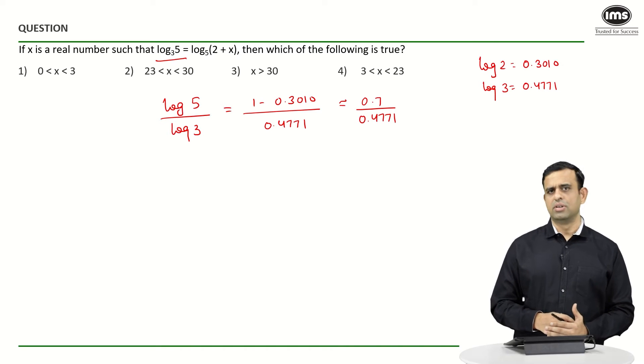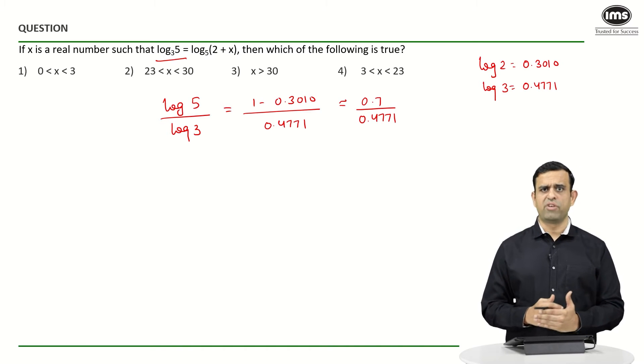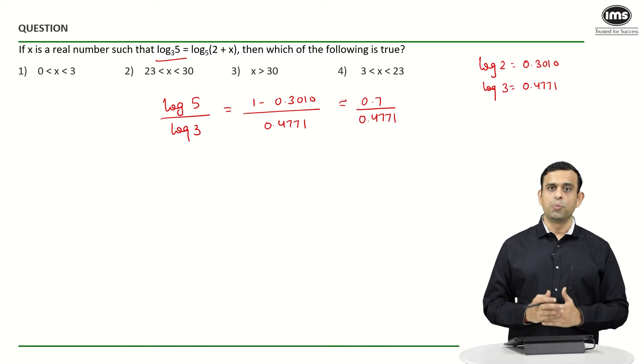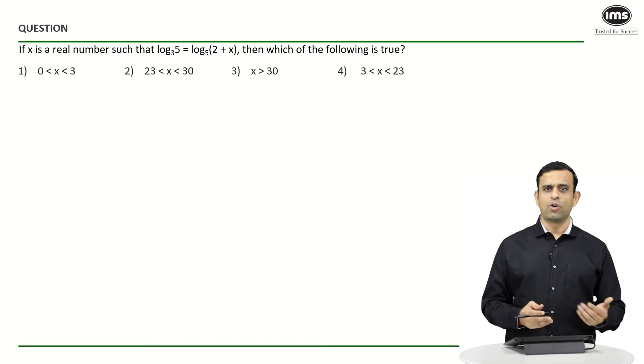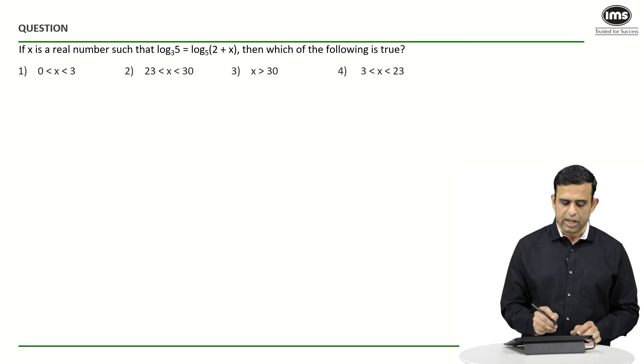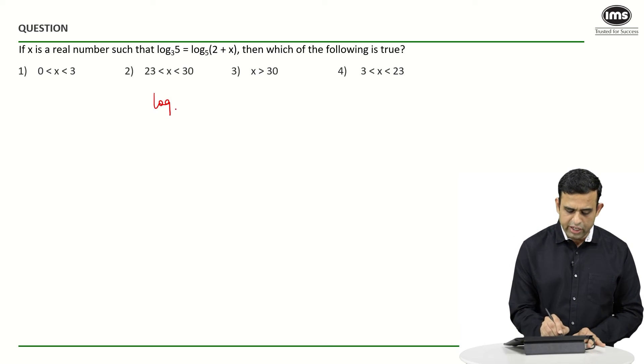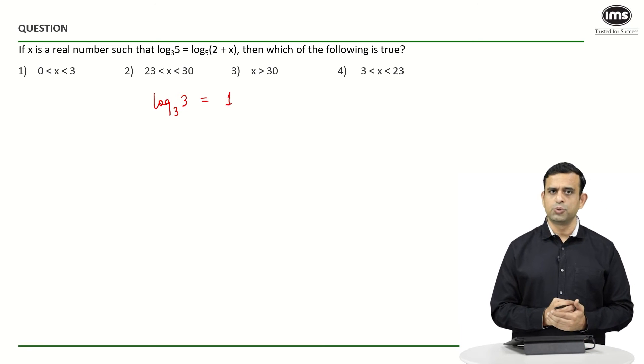I don't want to calculate the value of this particular expression log 5 to the base 3, so what could be the best possible approach? Instead of finding out the value of log 2 and log 5, what we can understand is that if I have log 3 to the base 3, this value is known to us—it has to equal 1.